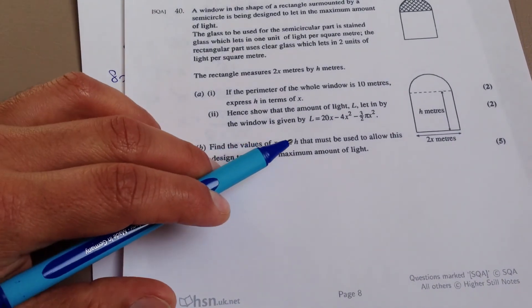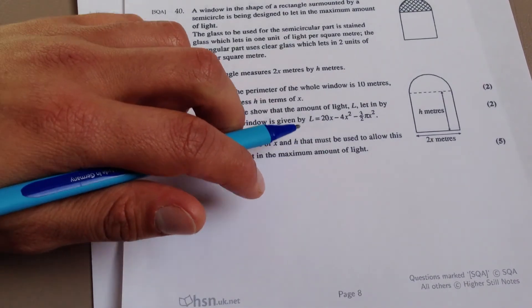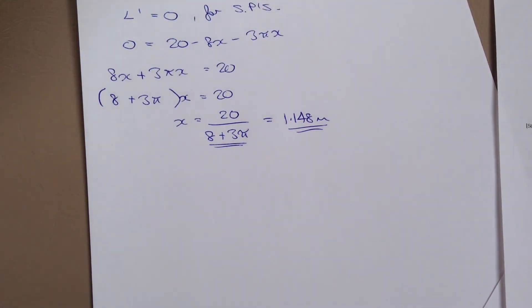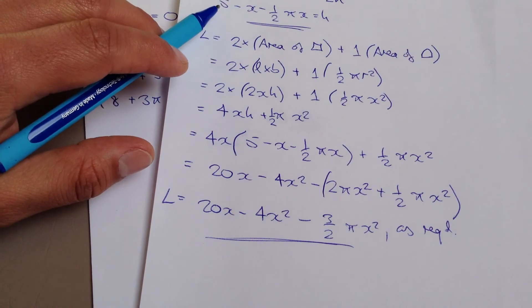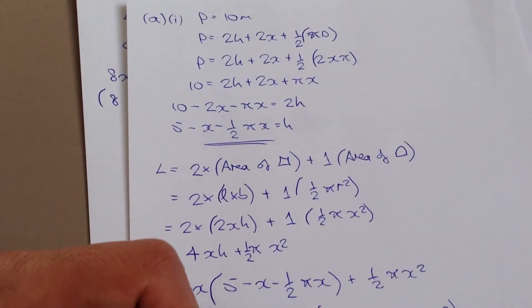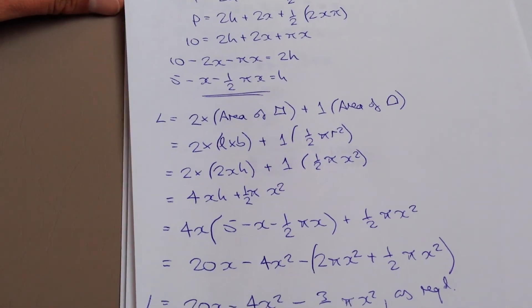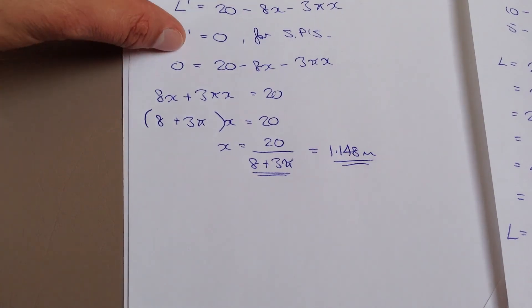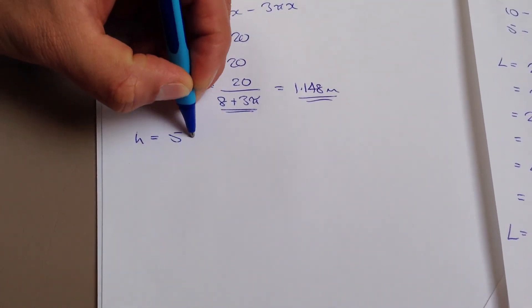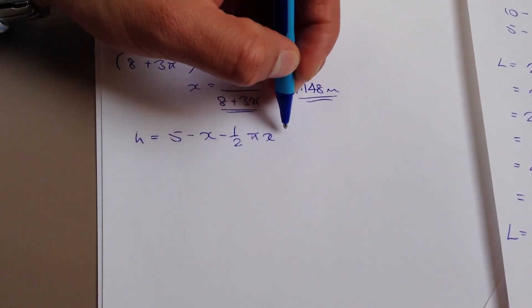We still need to find the h value that gives us the maximum amount of light. So, in order to be able to find that, we actually use what we found back here for h, which is this expression. This expression here. So, 5 minus x minus 1 half pi x squared. So, let's use that to help us find out what our h value should be. So, h equals 5 minus x minus 1 half pi x.